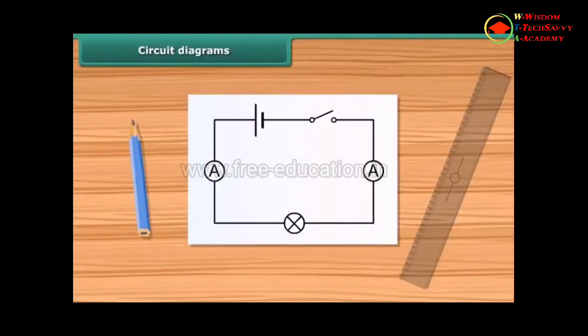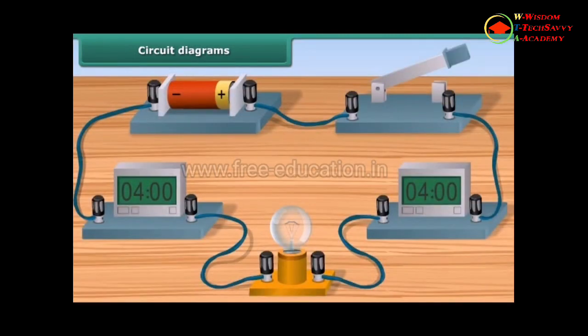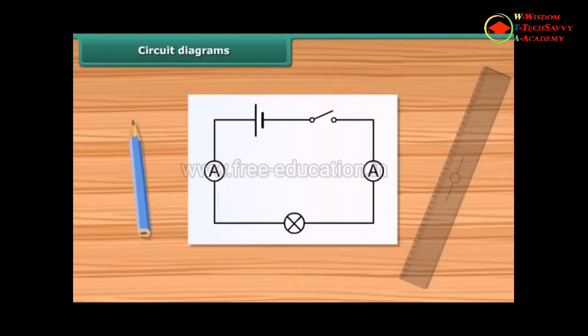Circuit diagram. A circuit diagram is a simplified representation of an electrical circuit. It is a drawing using standardized symbols of the arrangement. It shows how electronic components are connected together.